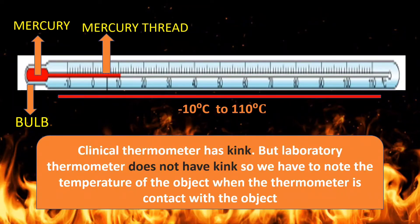As soon as we take out the laboratory thermometer or break contact between the thermometer and the object, there are chances that the temperature can fall down and we won't be able to record the exact temperature. Whereas in the clinical thermometer, because of the presence of a kink, the temperature does not fall down very rapidly and we can note it even if the body is no longer in contact with the thermometer.